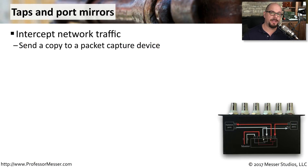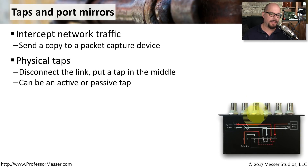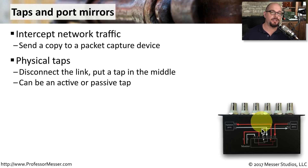If you're working in information technology, at some point you're going to need to capture packets. Getting these packets from the network may be a bit of a challenge. One common way is with a physical tap — you would disconnect the existing link, put the tap in the middle, and now you're able to see all of the traffic going back and forth over that single physical connection. These could be active taps that allow you to switch between many different connections and provide an additional boost of signal, or maybe a passive tap, which simply cuts the signal and sends a piece of it off to your analysis tool.